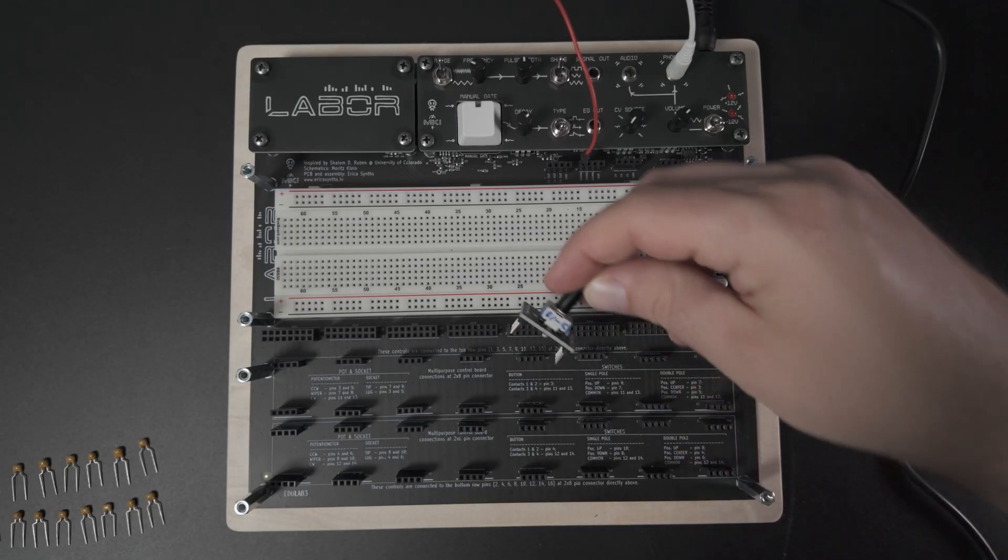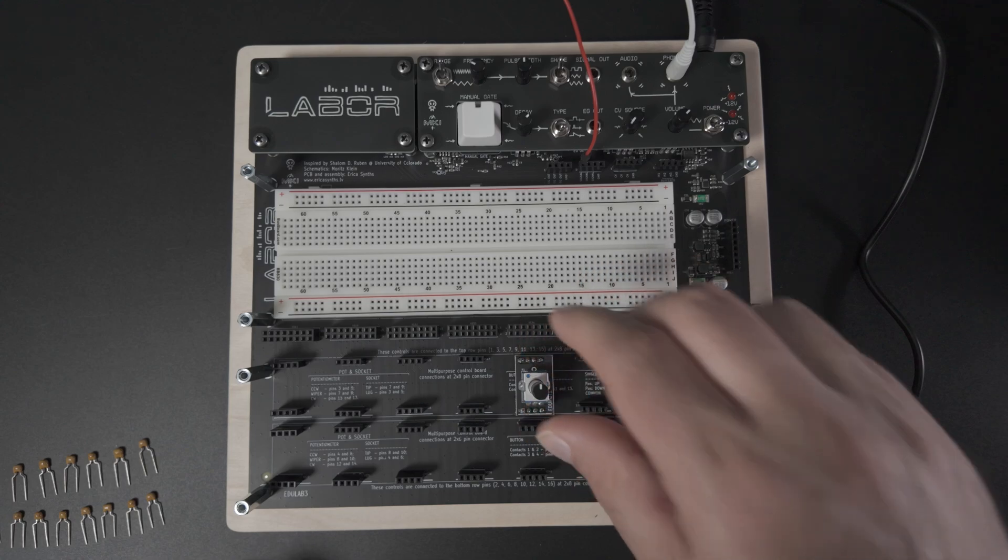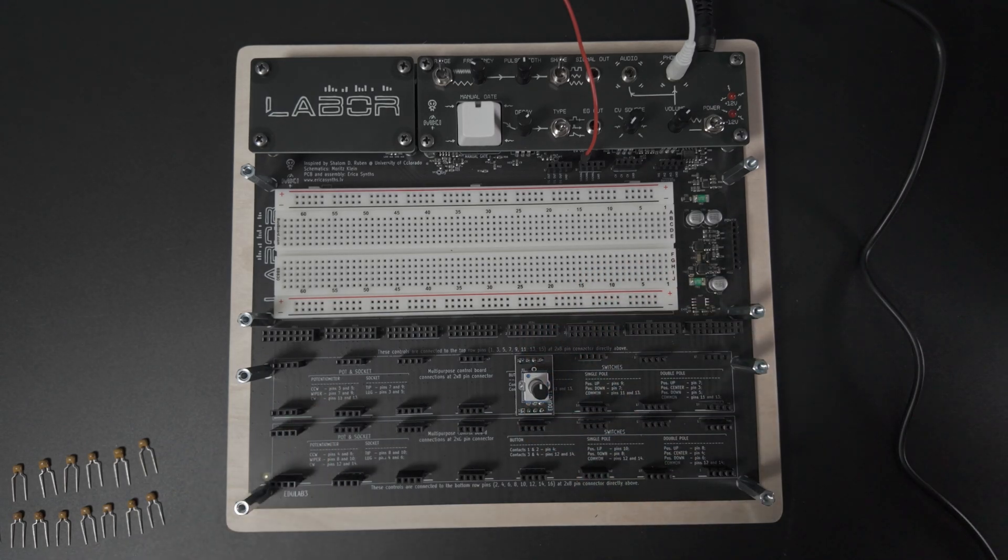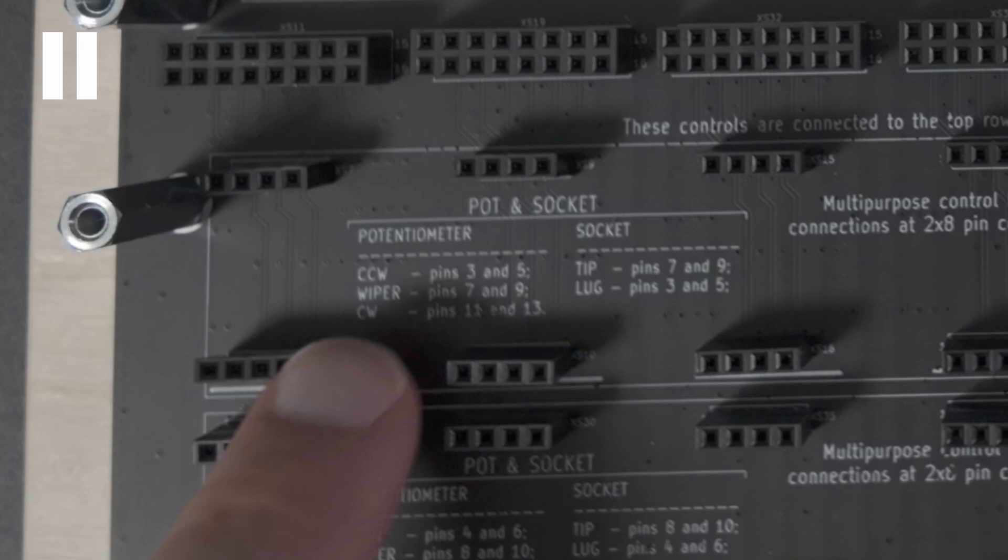Let's grab a 100k potentiometer, plug it into the modular section, and hook it up. From the notes on the LABOA board, we can tell that the counterclockwise leg is on pins 3 and 5, the wiper is on pins 7 and 9, and the clockwise leg is on pins 11 and 13.